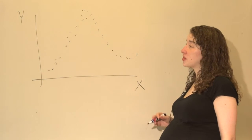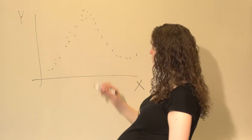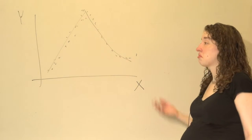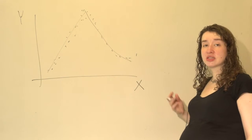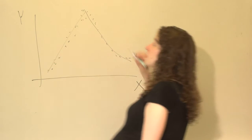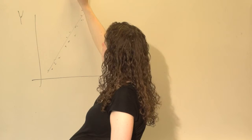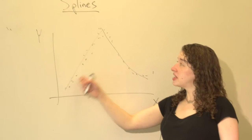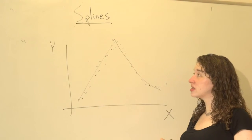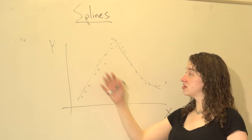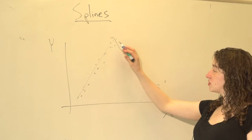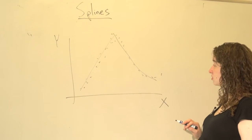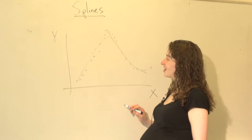As you're staring at this, I hope you're thinking of different ideas. One suggestion I've gotten from students before is to make two lines — maybe one line like that and one line like that. That's probably the simplest possible example of this particular nonparametric method, which is called splines, or spline models.